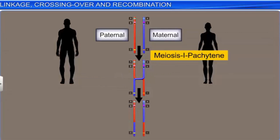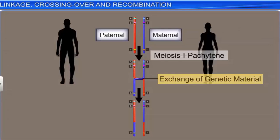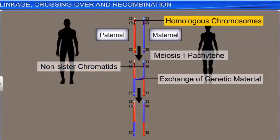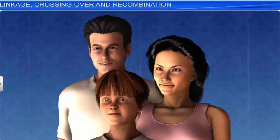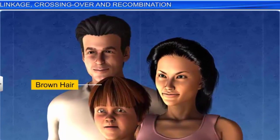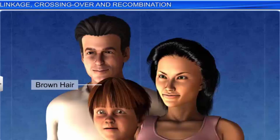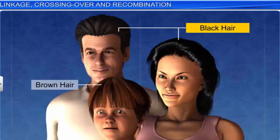During the pachytene stage of meiosis 1, sections of a chromosome usually intertwine and exchange genetic material between non-sister chromatids of homologous chromosomes. This process, where chromatids of a homologous pair exchange segments between them, is known as crossing over. Crossing over leads to recombination, or the creation of different combinations of alleles that do not exist in either parent, and hence it is one of the most important events that lead to variations in offspring.